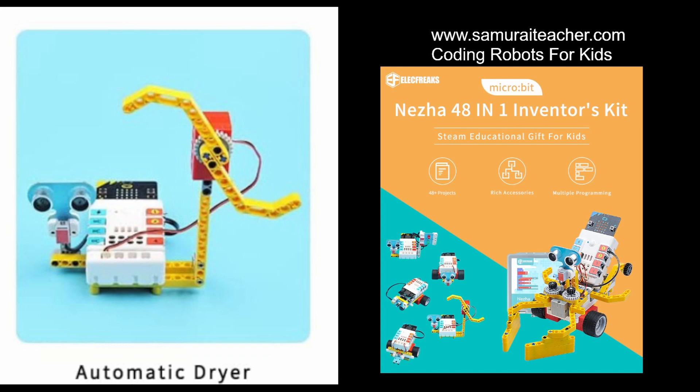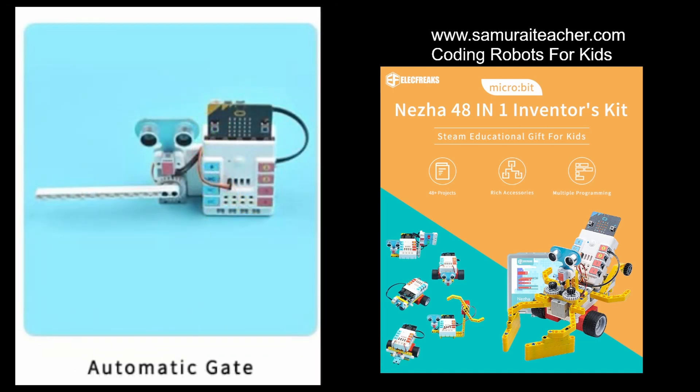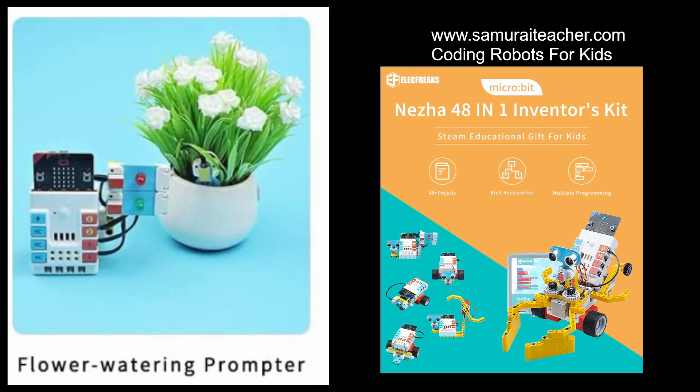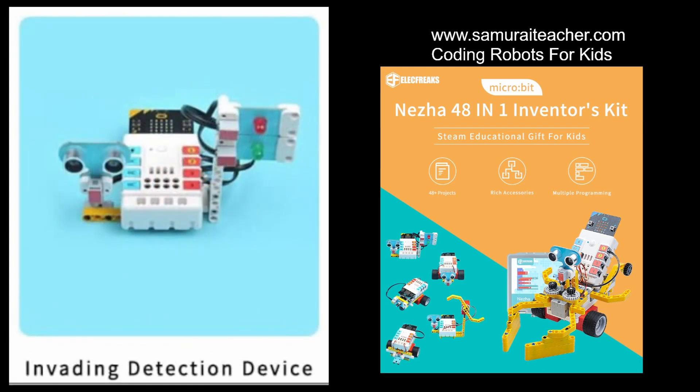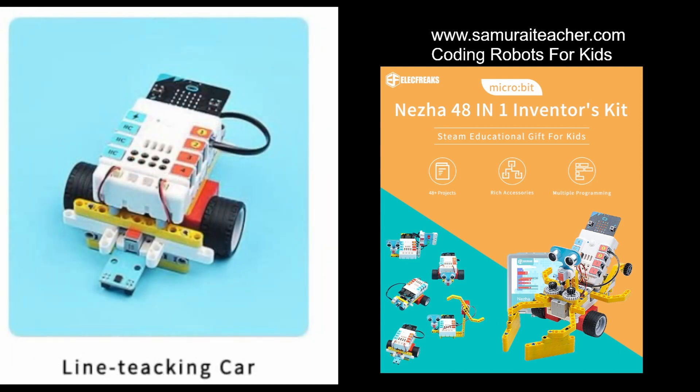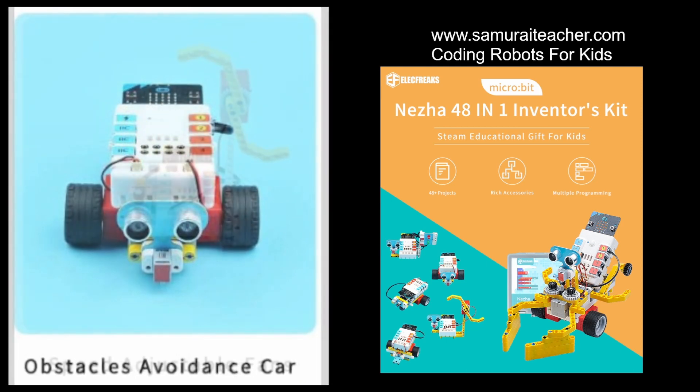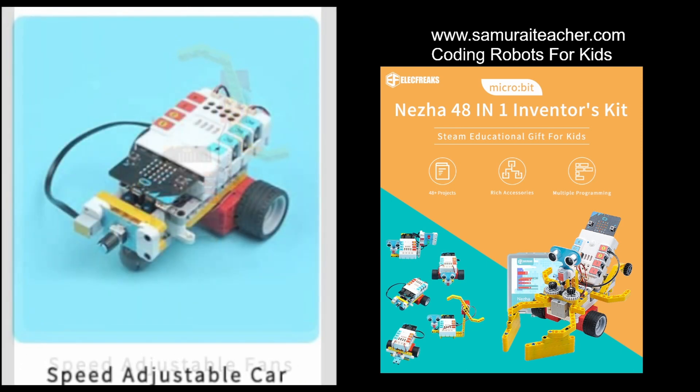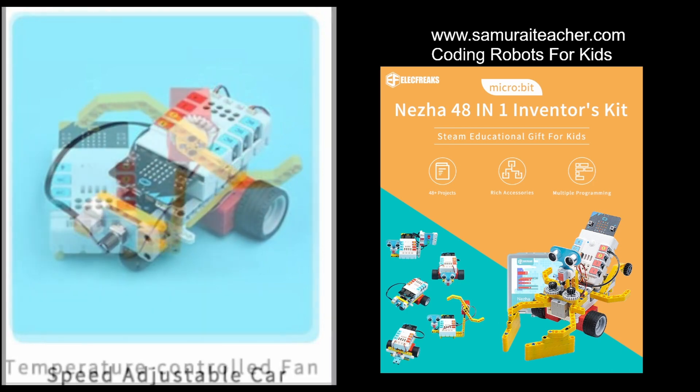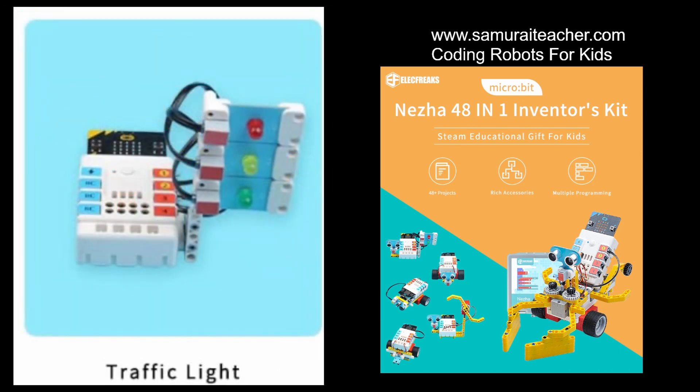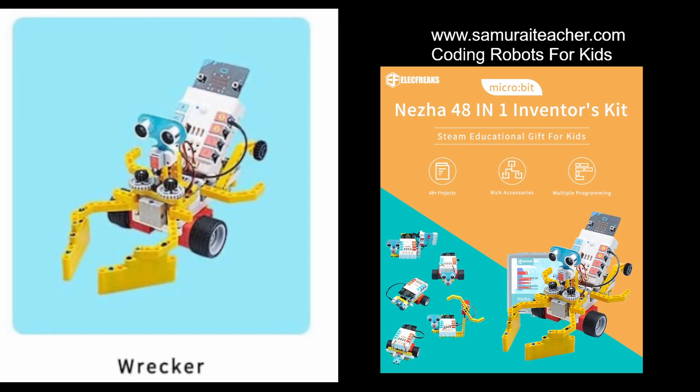Next we're going to assemble all these parts and create different robots and we're going to do some programming. Projects we're going to build: automatic dryer, automatic gate, flower water impromptu, invading detection device, line taking car, mini table lamps, obstacle avoidance car, speed adjustable fans, speed adjustable car, temperature control fan, traffic light, and wrecker.